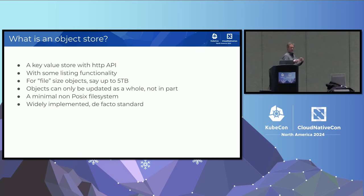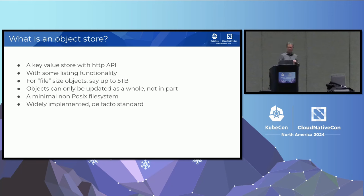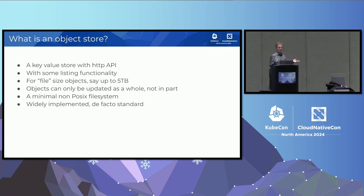What is an object store exactly? It's roughly a key-value store with an HTTP API. You have names which look a bit like file paths but have weirdly different properties, and you can store things in them up to typically about five terabytes or so. There's some listing functionality, and mostly people have copied the Amazon implementation interface — not entirely, like Azure has their own thing and Oracle has a couple of different things — but it's become a kind of de facto standard. There are lots of open source implementations; Minio is the best known.